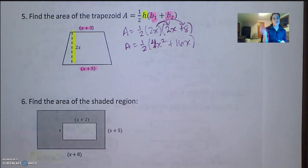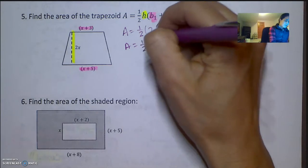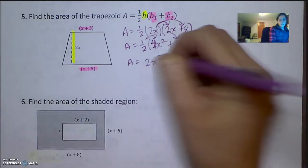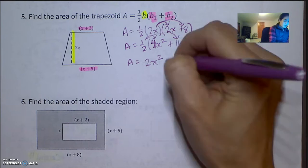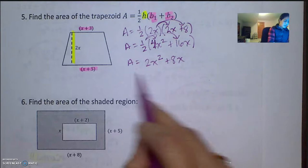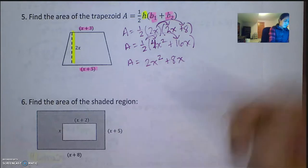Now, you can just distribute the one half to everything, and area will equal 2x squared, because half of 4 is 2, plus 8x. And then, unit squared.